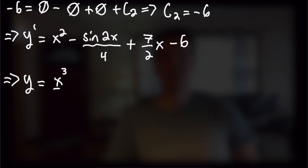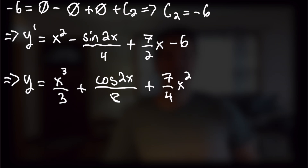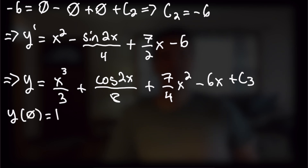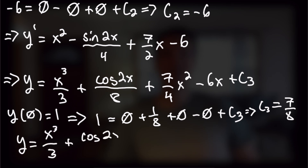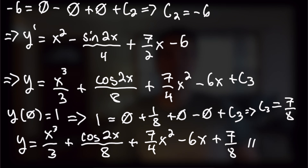Taking our third and final antiderivative, y equals x cubed over 3 plus cosine of 2x over 8 — the sine flips because we took the antiderivative of sine — plus 7 over 4 times x squared minus 6x plus c3. Using the final initial value y(0) equals 1: 1 equals 0 plus 1 over 8 plus 0 minus 0 plus c3, so c3 equals 7 over 8. Our final solution is y equals x cubed over 3 plus cosine of 2x over 8 plus 7 over 4 times x squared minus 6x plus 7 over 8.